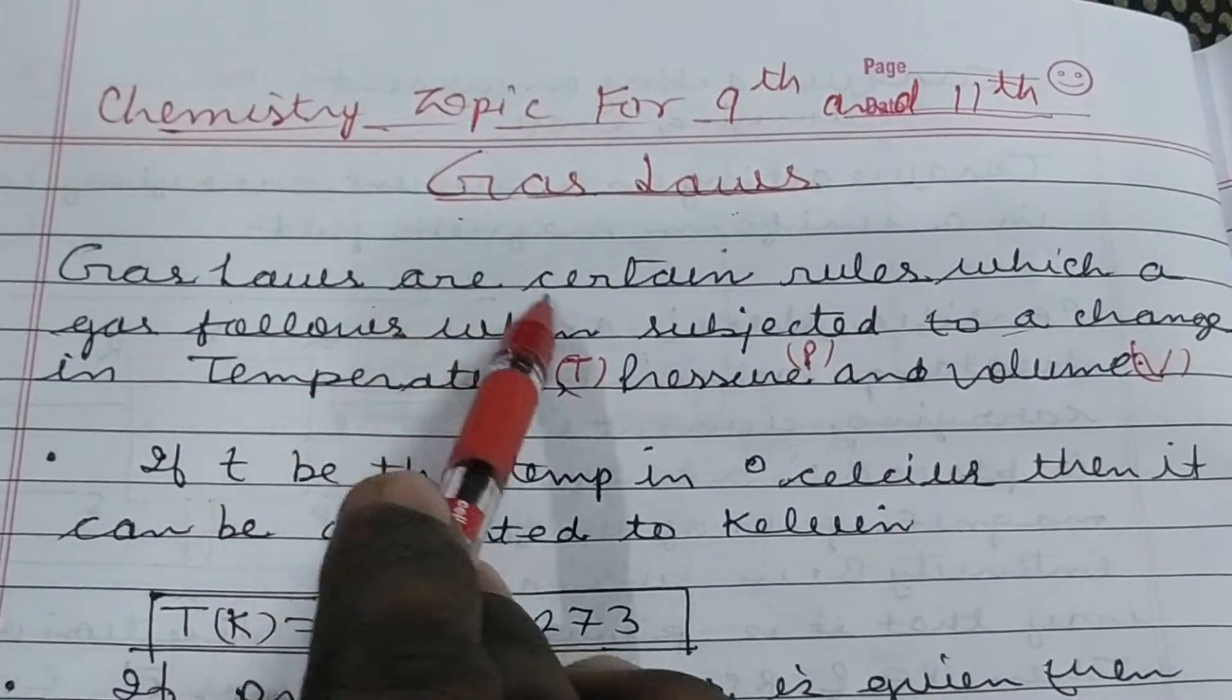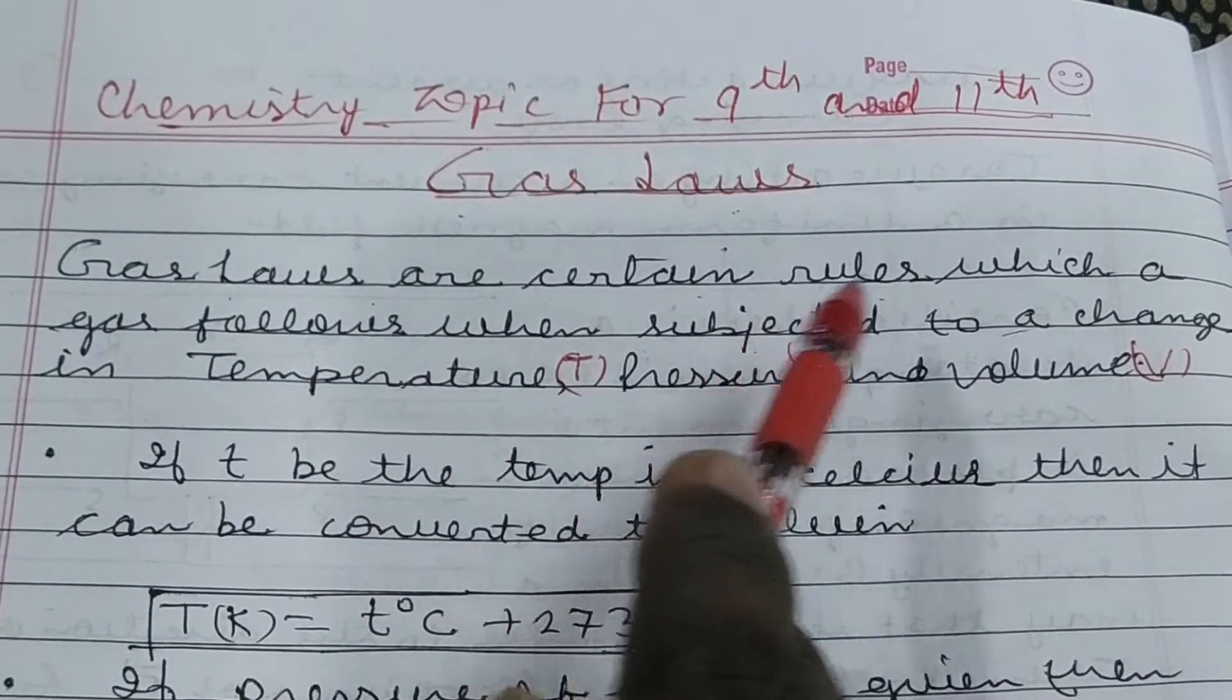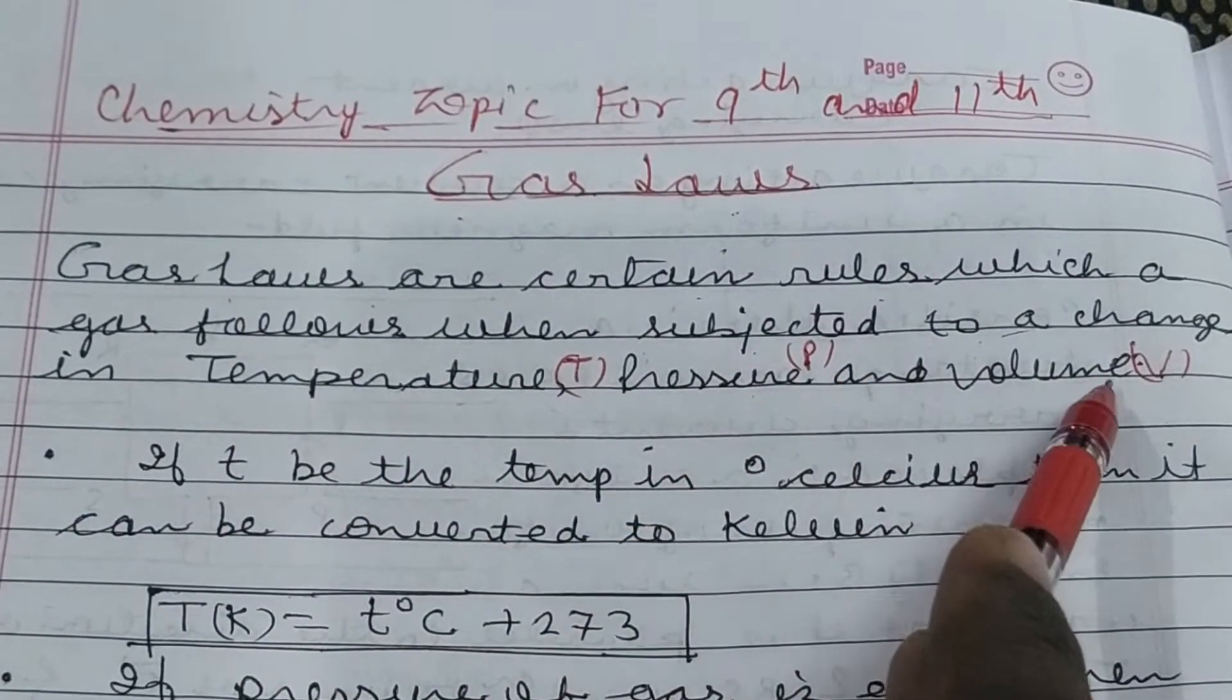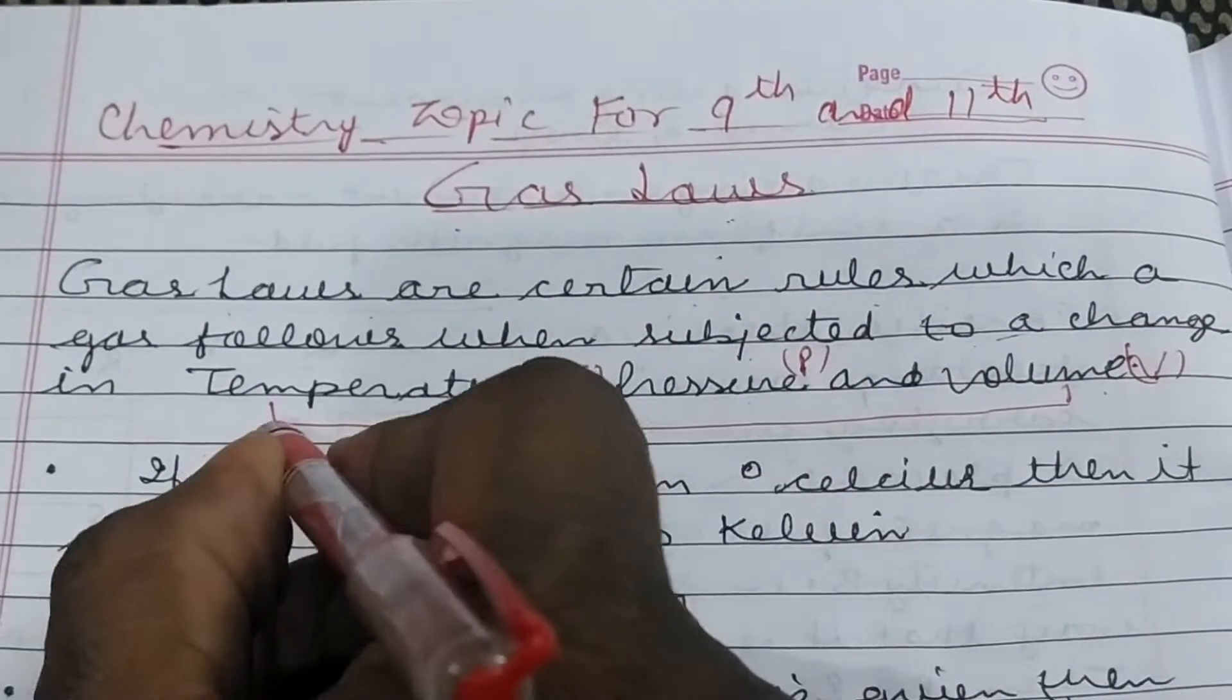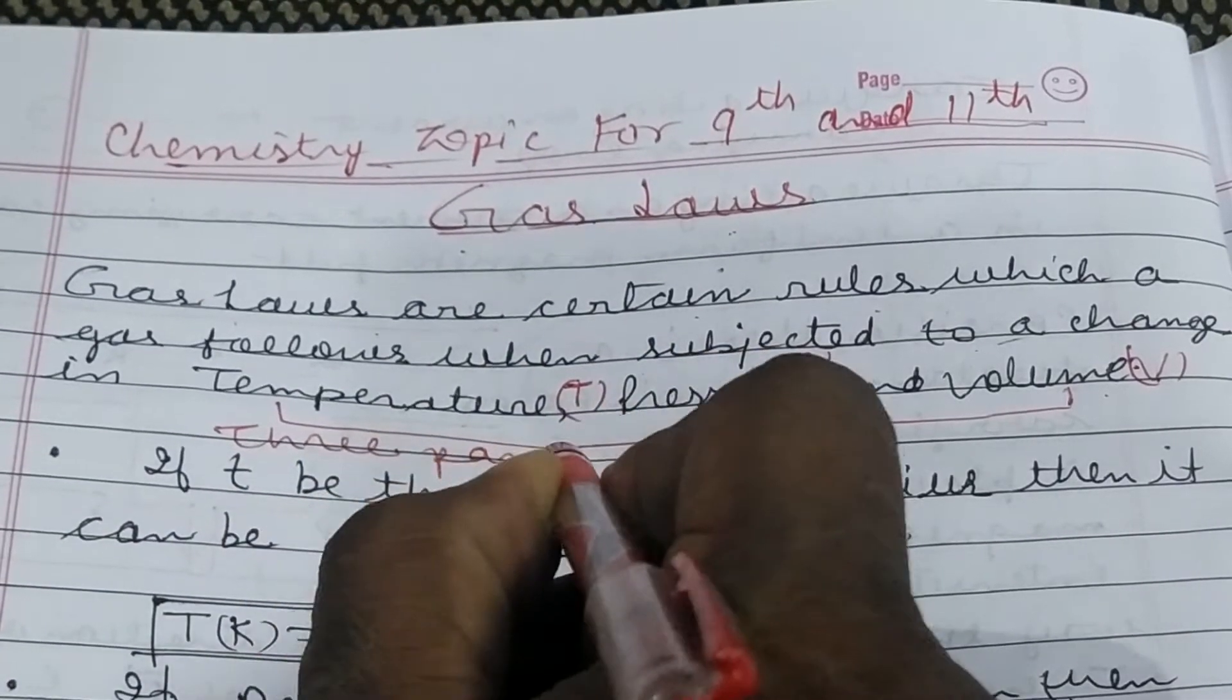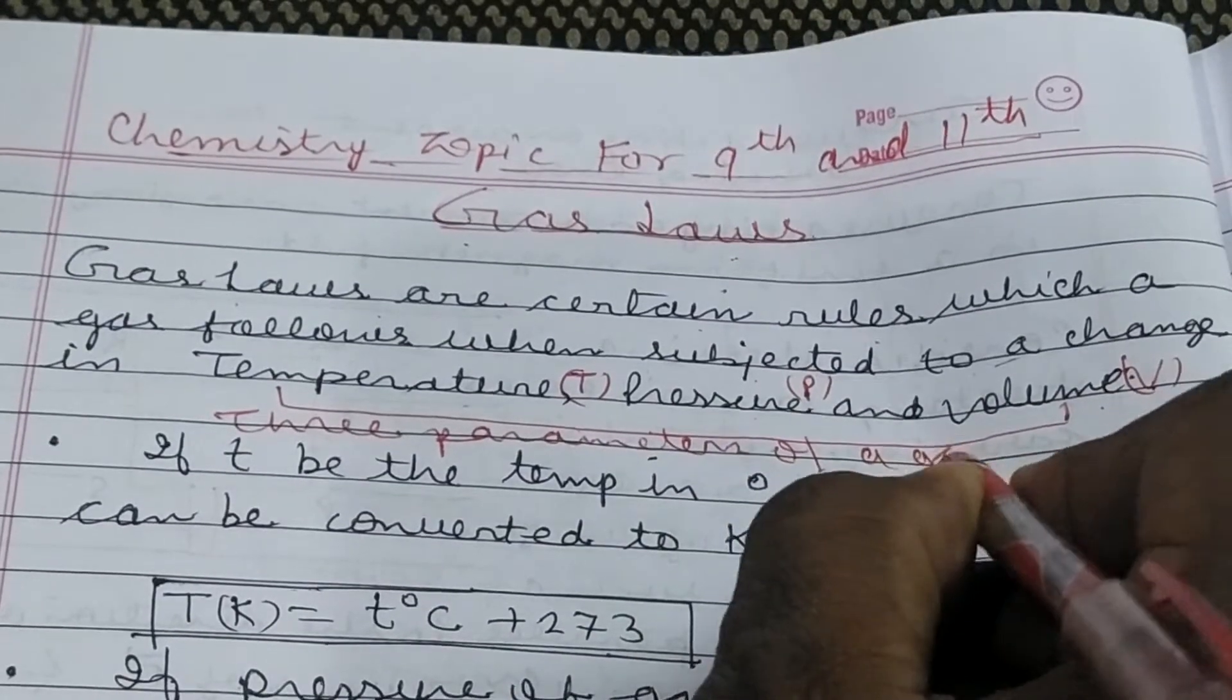Gas laws are certain rules which a gas follows when subjected to a change in temperature, pressure and volume. You need to know that temperature, pressure and volume are three parameters of gas.